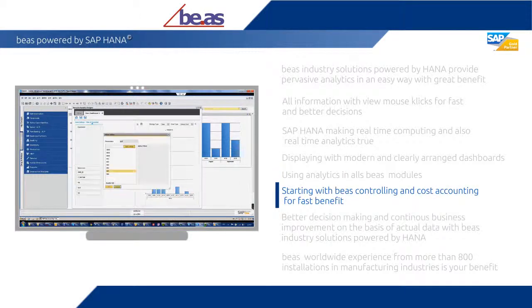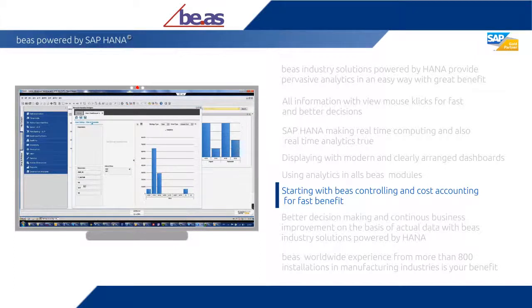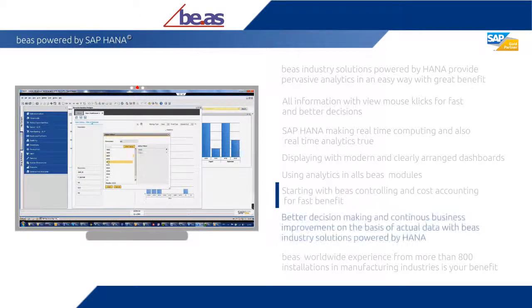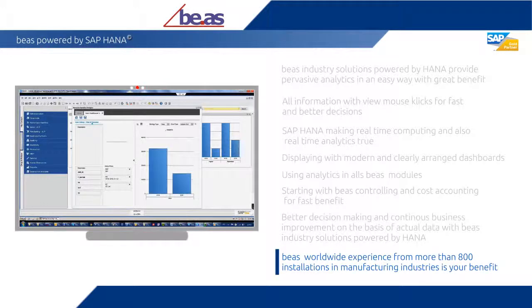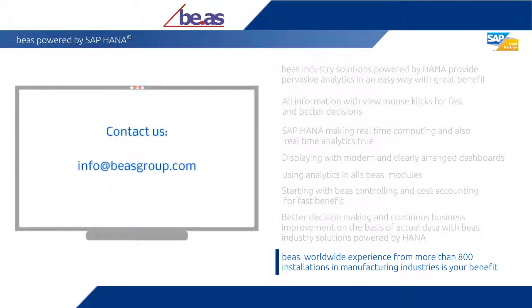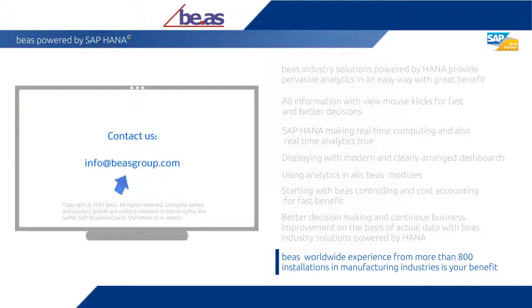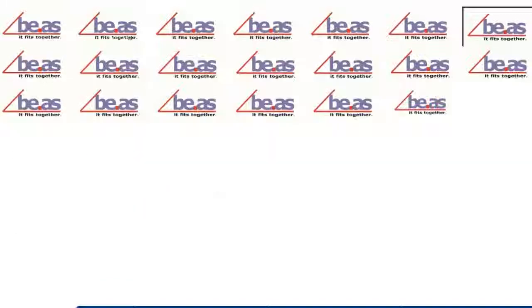Start with pervasive analytics — SAP Business One powered by HANA — in BS controlling and cost accounting to get the best of it. Take the front seat to improve your business today and tomorrow. BS brings experience from more than 800 installations in the manufacturing industry. Feel free to contact us for more information about BS industry solutions powered by SAP HANA. Thank you.